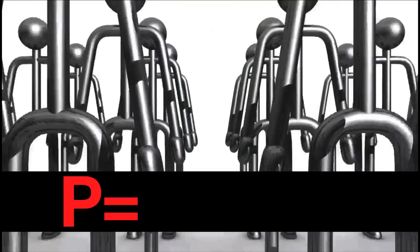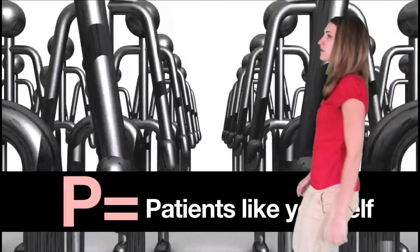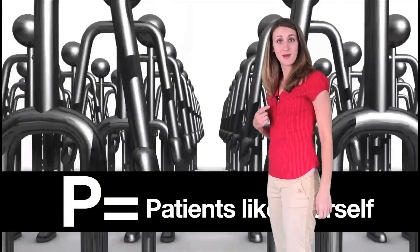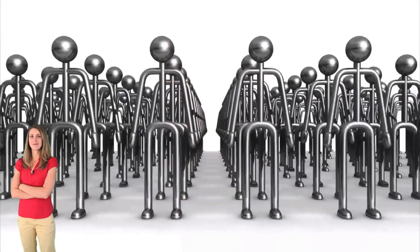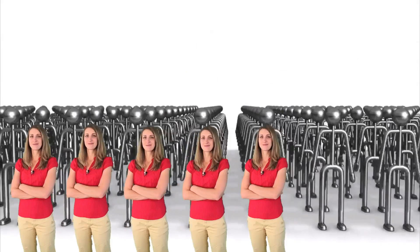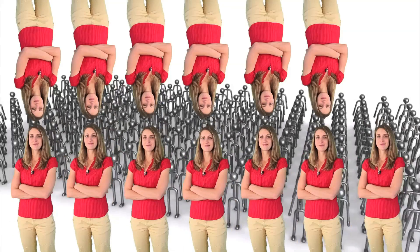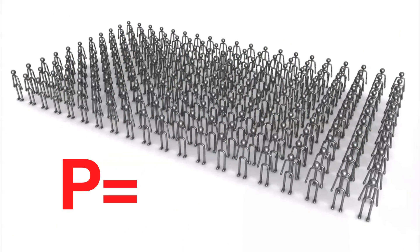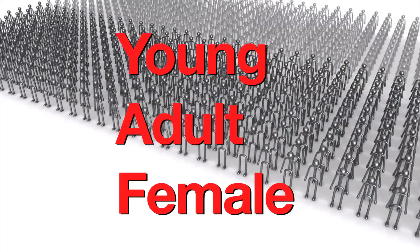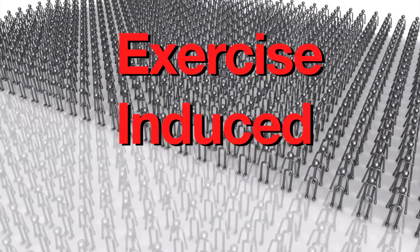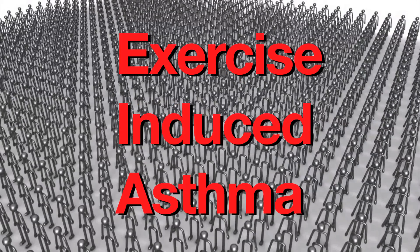Let's use the PICO method to formulate your question. P stands for patients like yourself — patients with the same age, ethnicity, gender, medical history, and diagnosis. In this case, the P is young adult female patients with exercise-induced asthma.